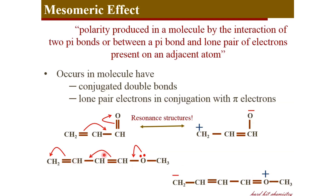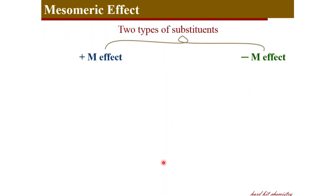Again, polarity is induced in the molecule due to the presence of a methoxy group which contains a lone pair of electrons in conjugation with pi electron clouds. That is why the mesomeric effect operates here, resulting in polarity of the molecule. The two structures here are resonance structures. There are two types of mesomeric effects: plus M effect and minus M effect.